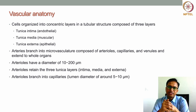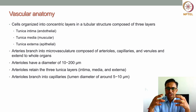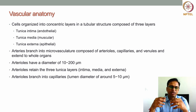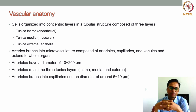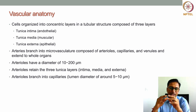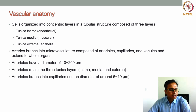The tunica intima is the innermost layer of the blood vessel, composed of endothelial cells that form a layer on the innermost part of the tubular structure. The next layer is the tunica media — the muscular layer just above the endothelial layer, composed mostly of smooth muscle cells. On top of that is the outermost layer, the tunica externa, where epithelial and other cell types are present.